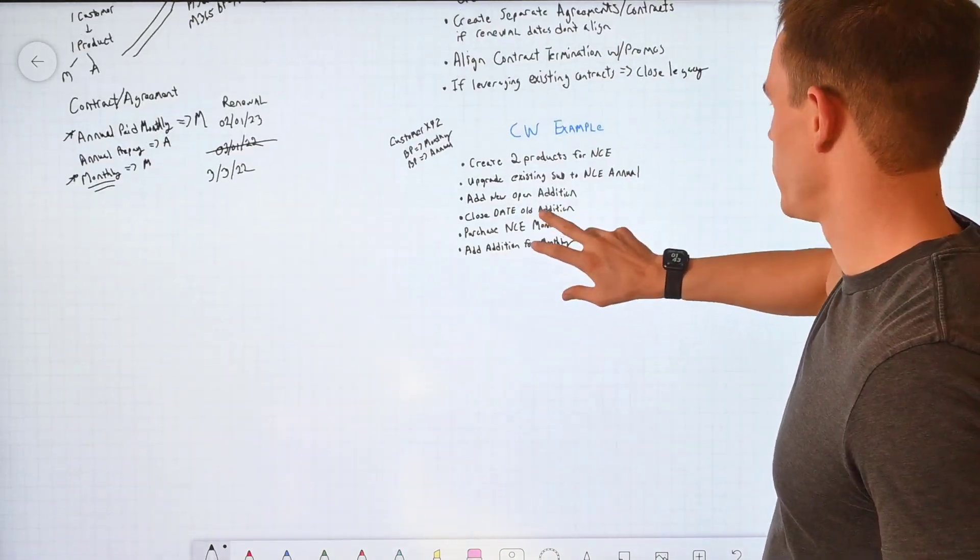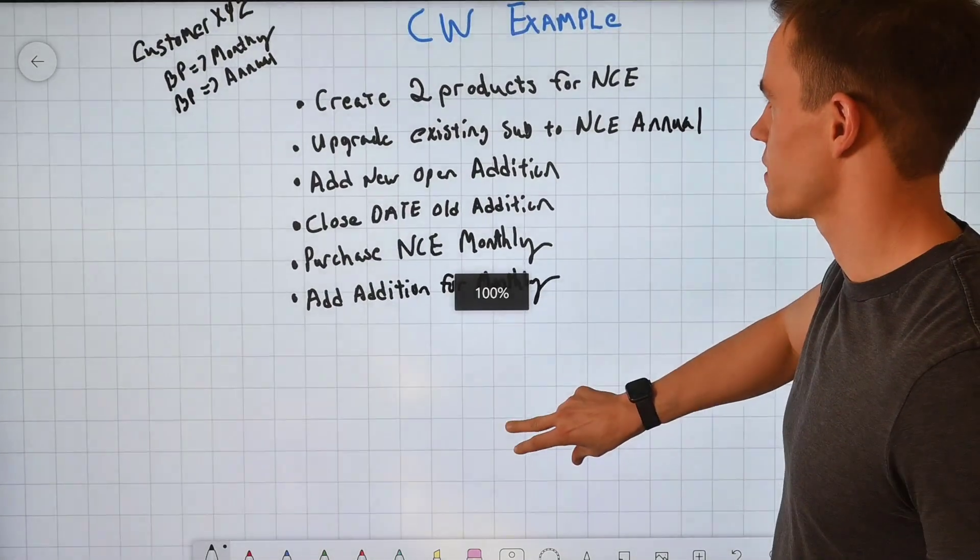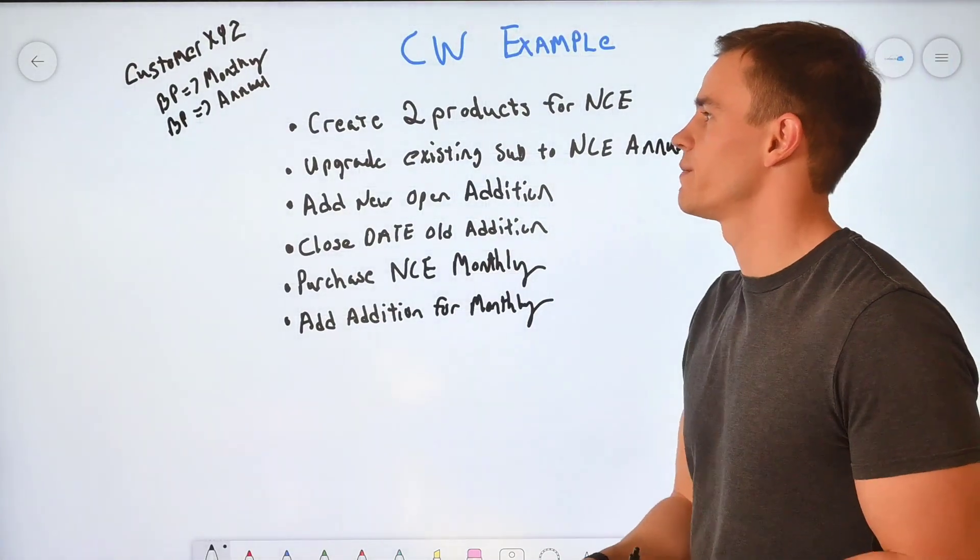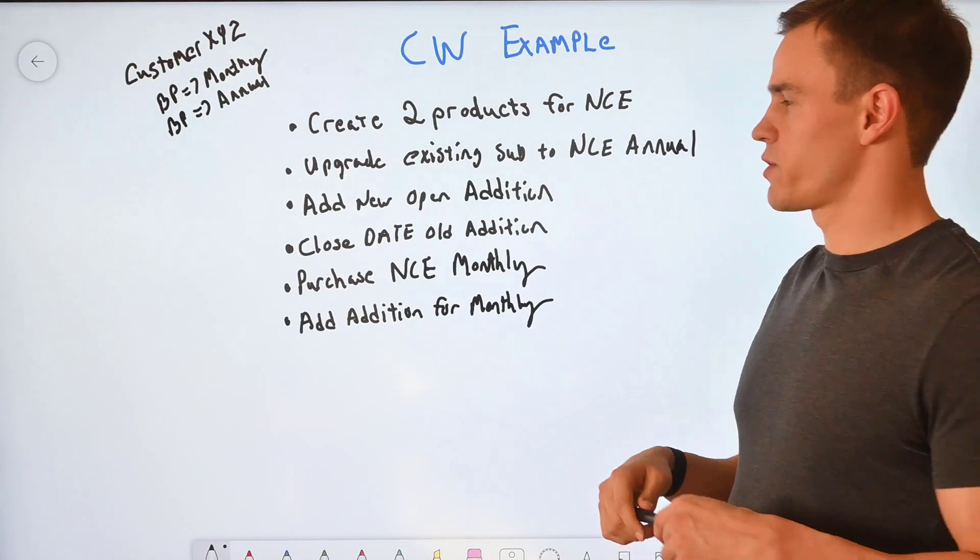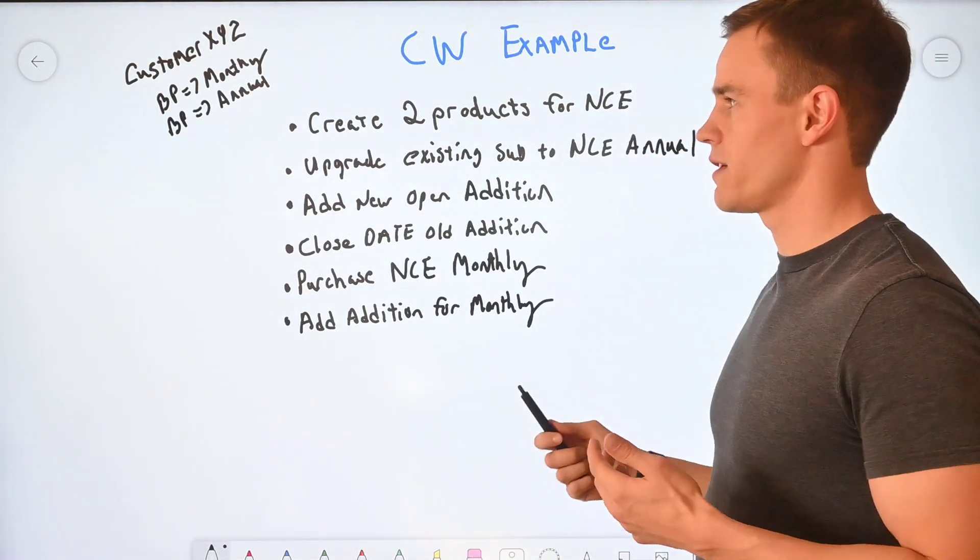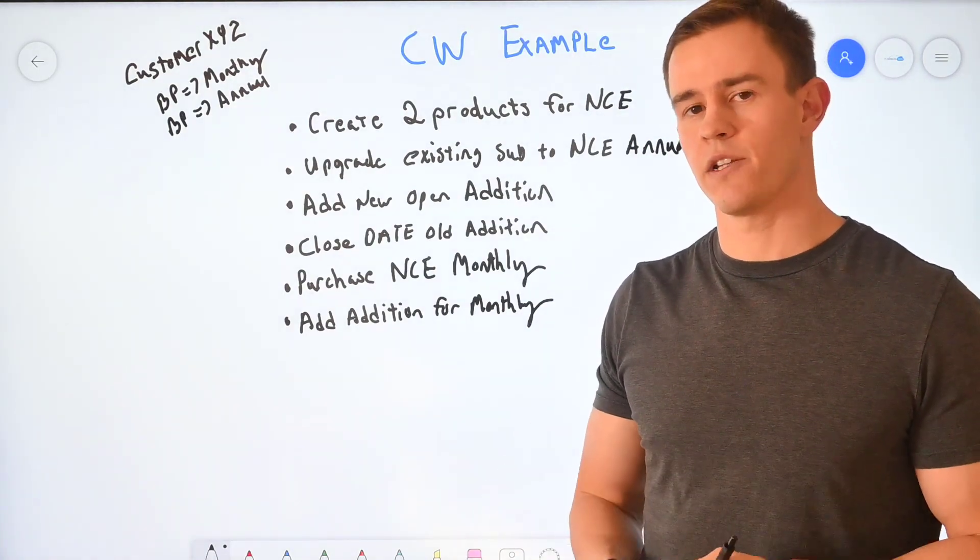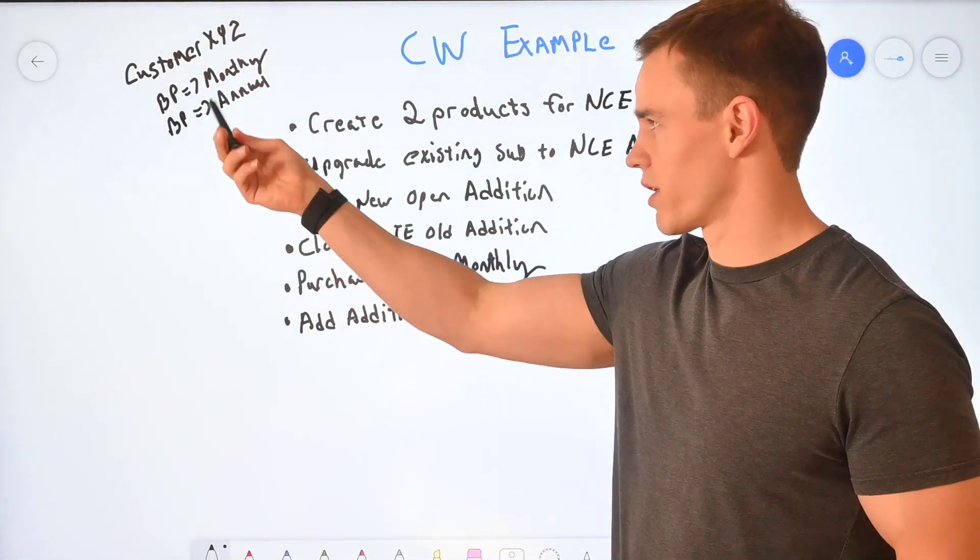So the next thing I want to do here is just walk through an example. This is going to be using ConnectWise and essentially here, we're going to have the customer situation of, hey, they're on BP monthly today and they're going to be converting into a mix of BP monthly, BP annual commits, both paid monthly though.